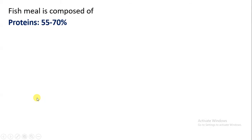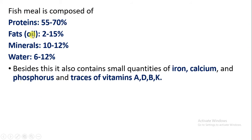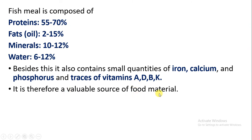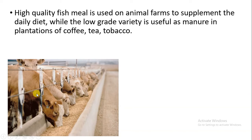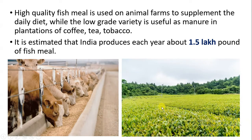Fish meal is composed of proteins, fats, minerals, and water, with protein present in very large quantity. Besides these, fish also contains iron, calcium, phosphorus, and some traces of vitamins A, D, and B. High quality fish meal is sent to animal farms as food. Low grade variety of fishes are used as fertilizer and manure in the plantation of coffee, tea, and tobacco.